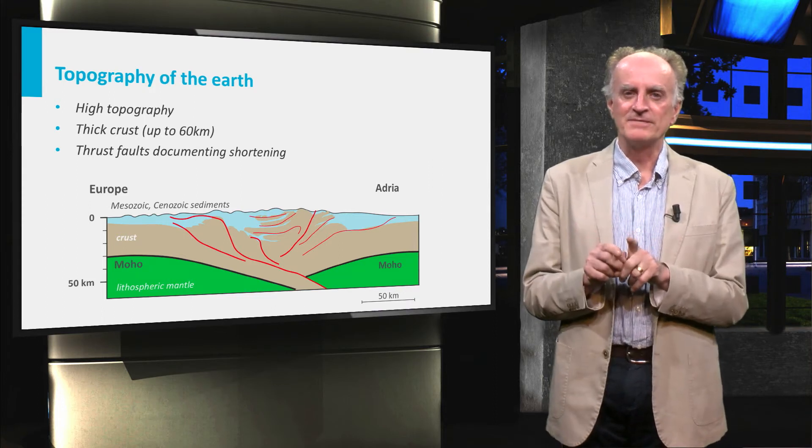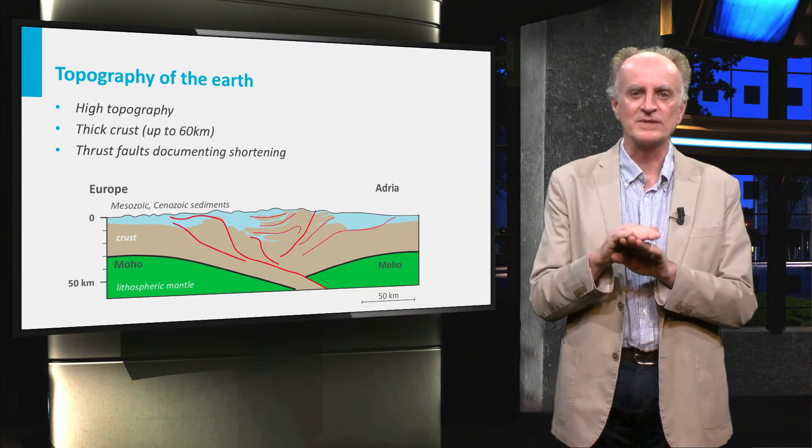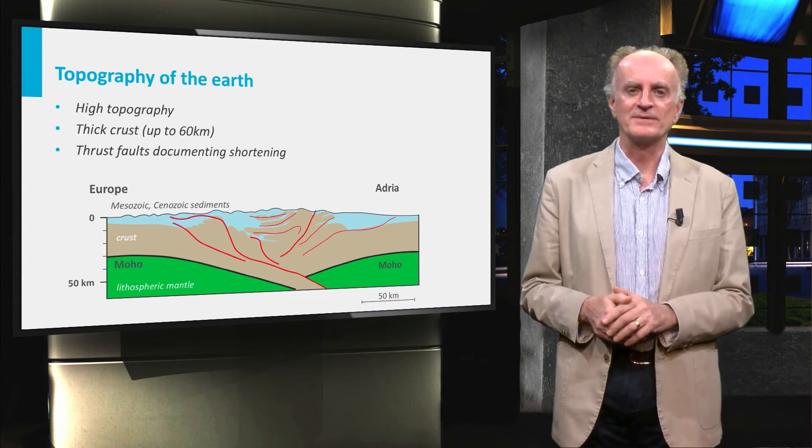In the mountain belt itself you see a large number of thrusts, folds which accommodate shortening. Shortening is another characteristic of most mountain belts.